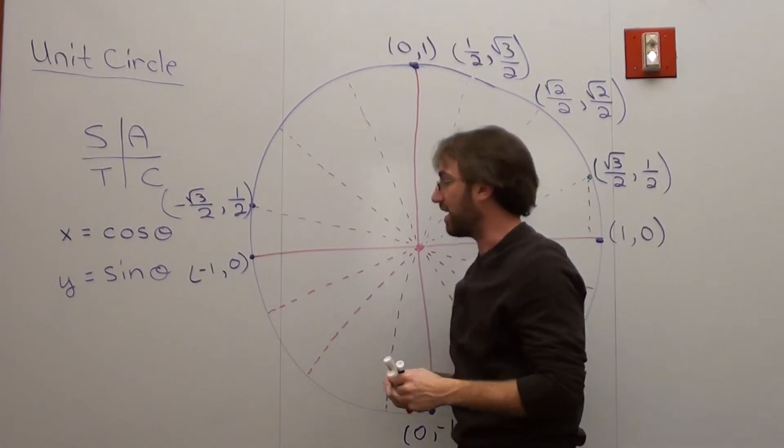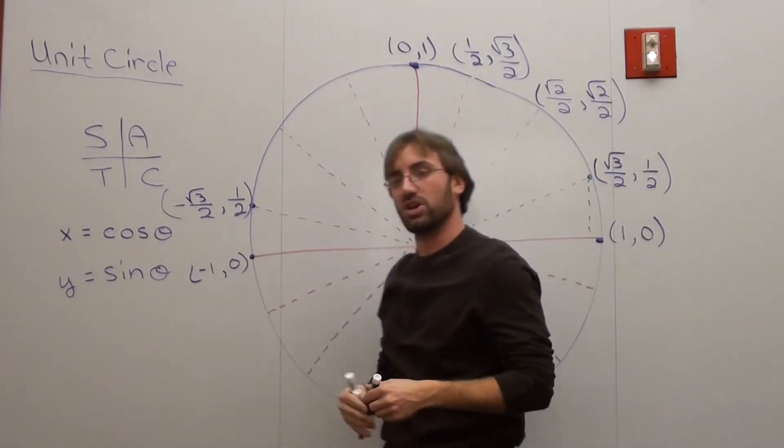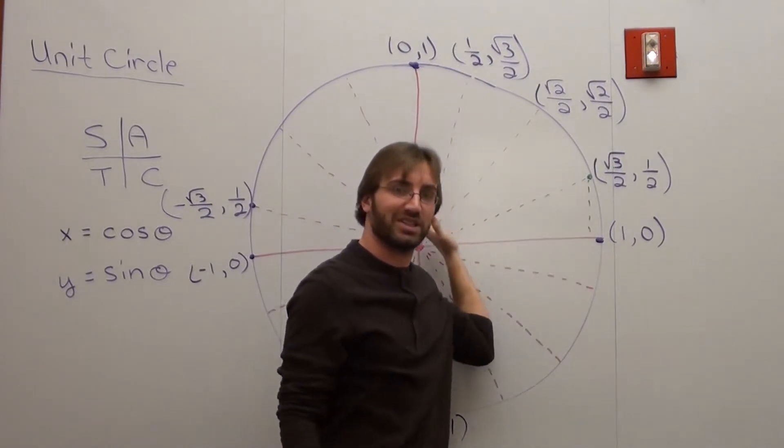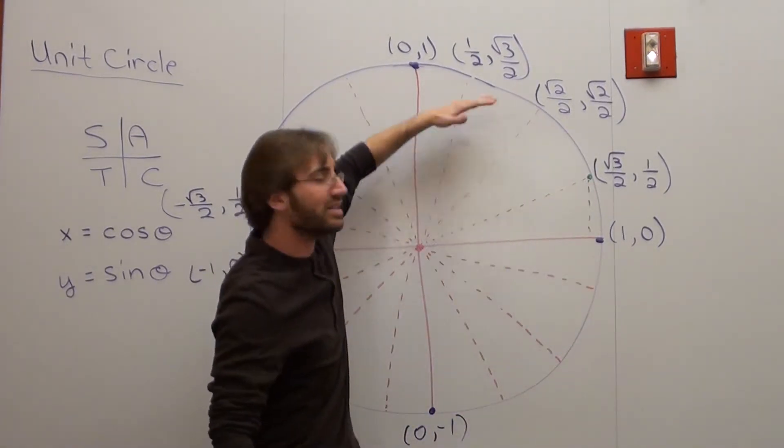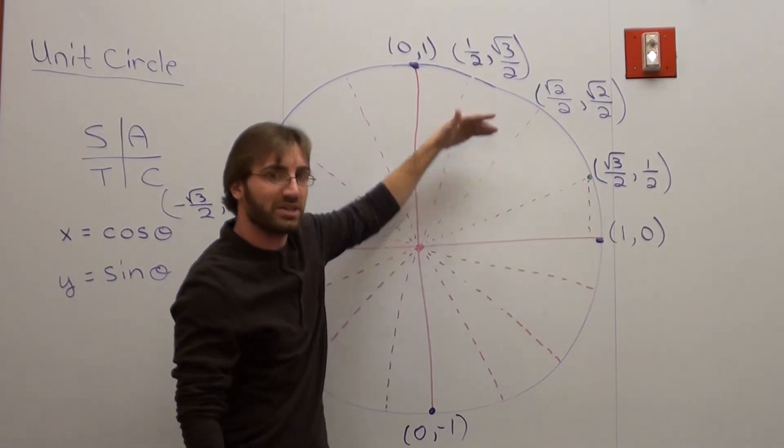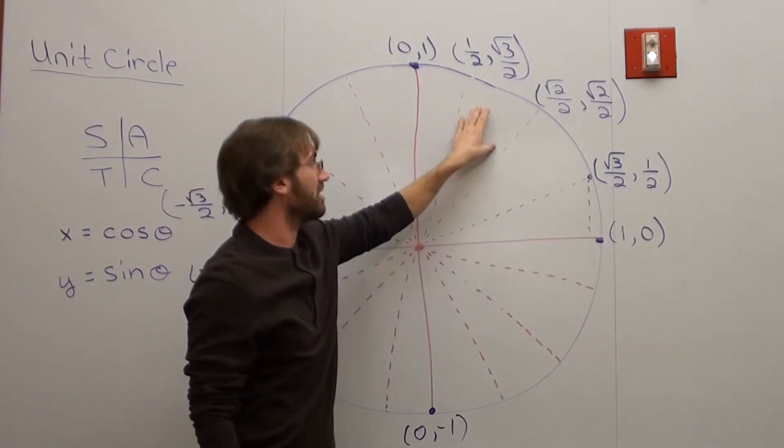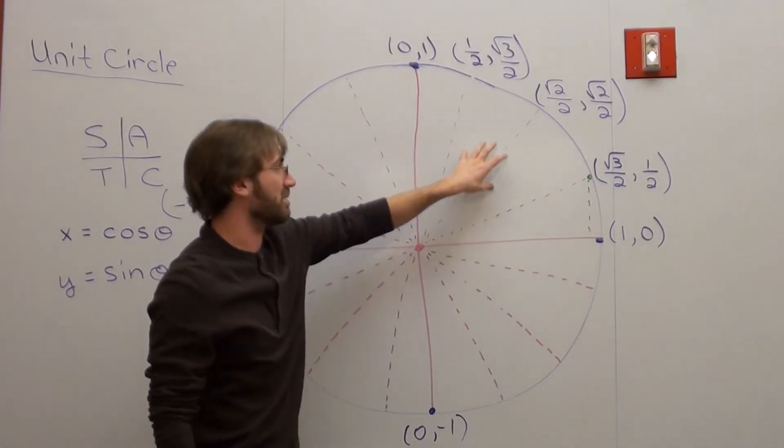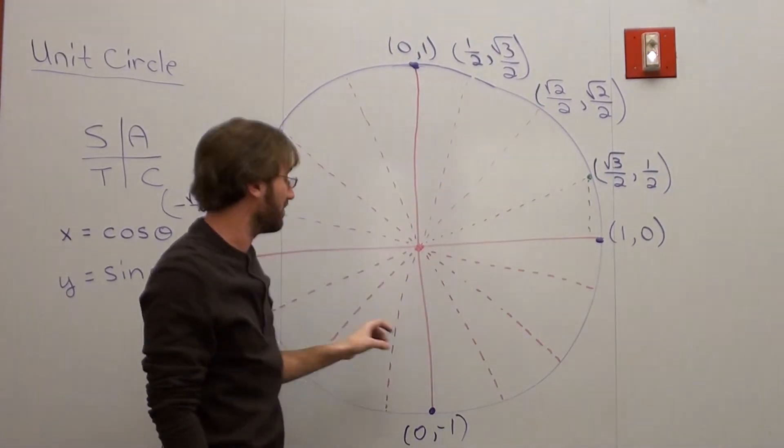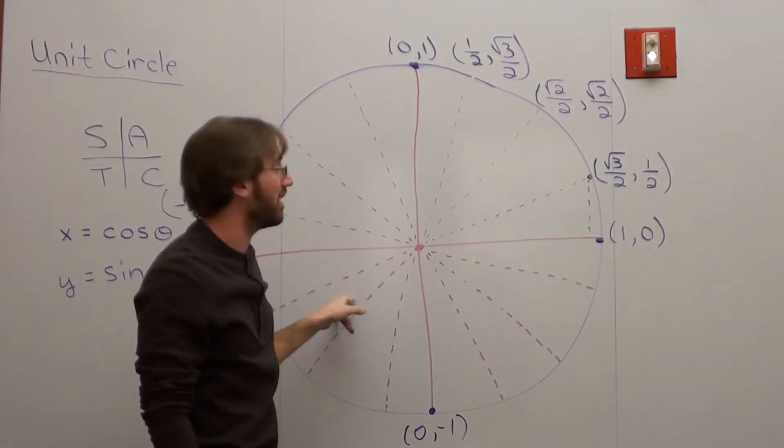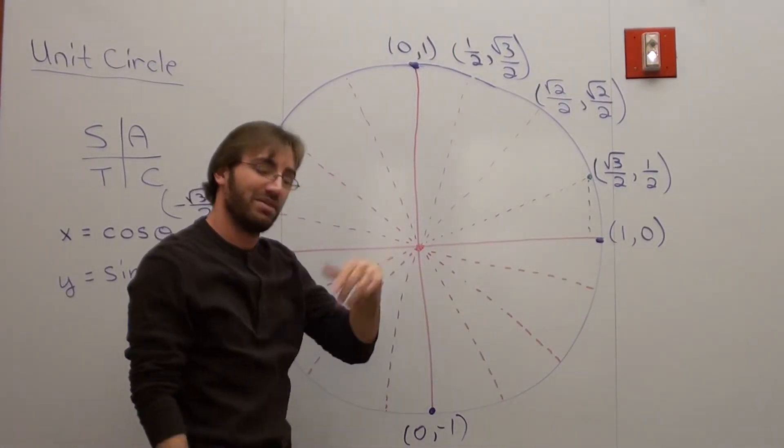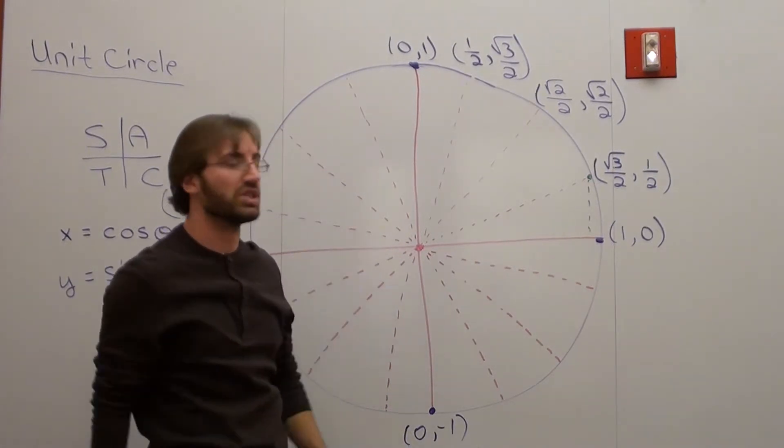And if you want a better way to think about it, it's this. If x equals the cosine theta, that means cosine will always be positive here, because this is where x is positive. Sine will always be positive here, because that's where y is positive. The x and y are positive here. The reason why the tangent is positive here and here is because a positive divided by a positive is positive, and a negative divided by a negative is positive. But when you've got one positive, one negative here and one positive, one negative, it means the tangent is going to be negative. Really cool stuff.